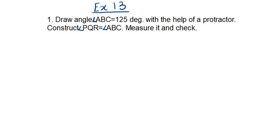Hello friends, welcome back to my YouTube channel Unlock Your Learning. In this video we are going to solve ICSE Mathematics Class 7 Chapter 13 Basic Constructions, Exercise 13, Question number 1: Draw an angle ABC equal to 125 degrees.